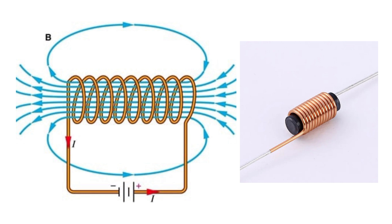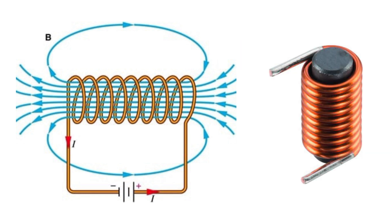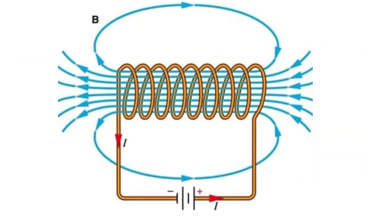The basic mechanism of an inductor is that when current flows through the coil, that coil will generate a magnetic field. That magnetic field induces a voltage across the coil, and the energy is stored in the magnetic field. This is how the inductor stores energy.